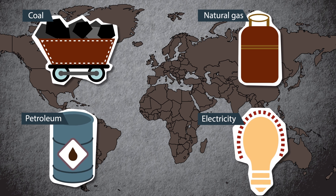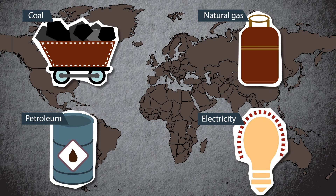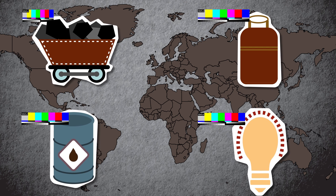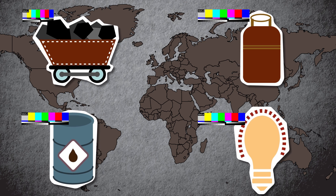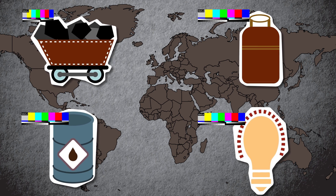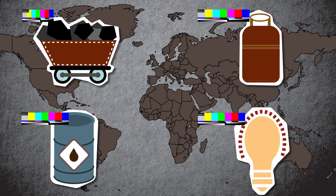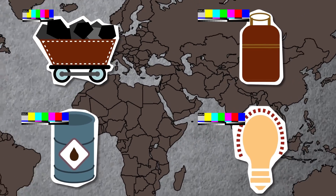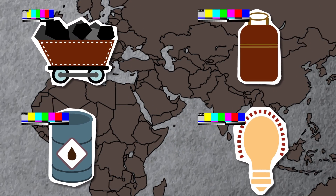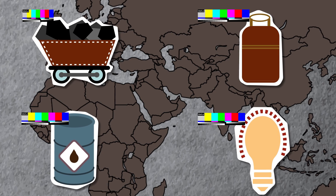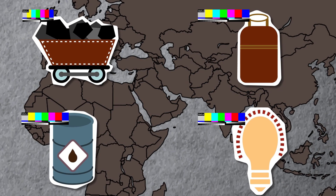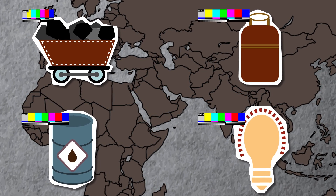Overall growth of a country depends upon its energy resources. Countries with natural resources tend to be developed socially and economically. For example, Middle East Arab countries, which are rich with petroleum resources, are highly developed and economically rich countries.